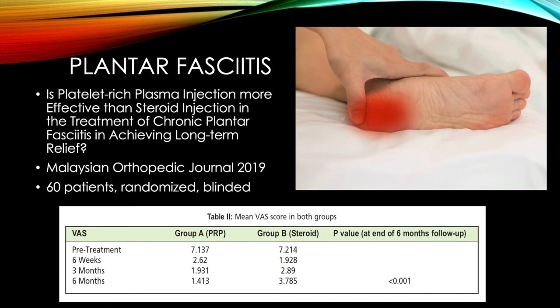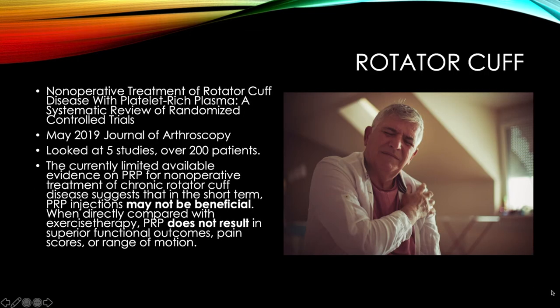For plantar fasciitis, a study from the Malaysian Orthopedic Journal showed that PRP injections were extremely helpful. Looking at the visual analog scale, before treatment scores were around seven; at six weeks, steroids were actually doing better. But at three months and six months, the PRP group kept getting better and better — and this was statistically significant.